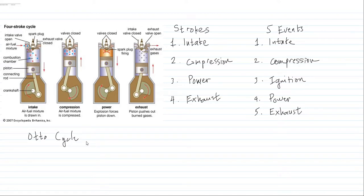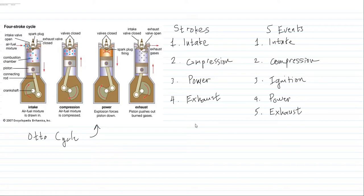We will discuss the Otto cycle, which is the ideal cycle for a spark ignition engine. But before that, let us first discuss the operation of a spark ignition engine, or what you call a gasoline engine. To simplify things, we have here the four-stroke, five-event cycle.